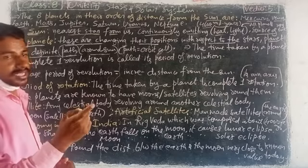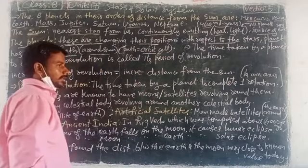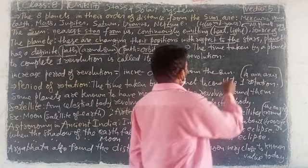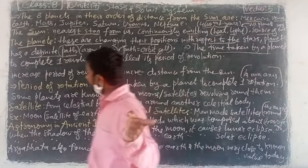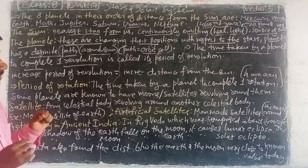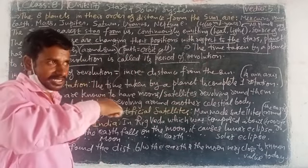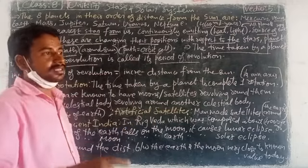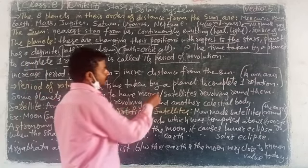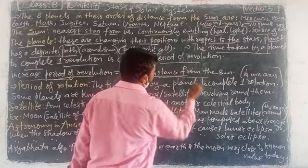Planets use that path — the orbit — for revolving around the Sun. The time taken by a planet to complete one revolution around the Sun is called its period of revolution. As the period of revolution increases, the distance from the Sun also increases.